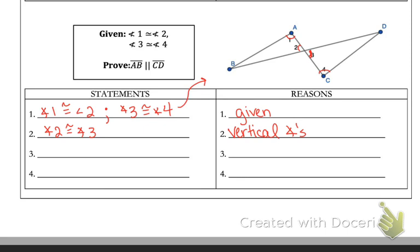Since angles two and three are vertical angles, I'll mark angle four with that same single mark so all four angles are congruent. Angle one is congruent to angle four because both were congruent to angles two and three — that's marked in the picture. That's the transitive property.